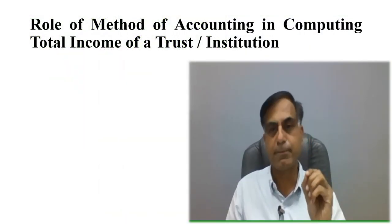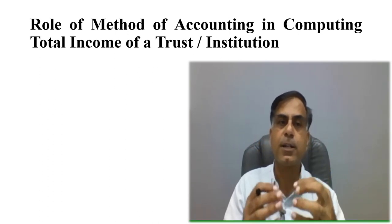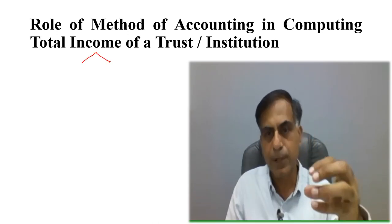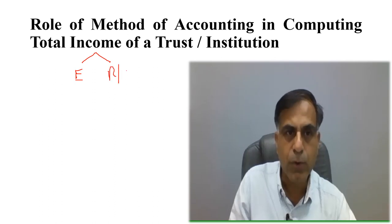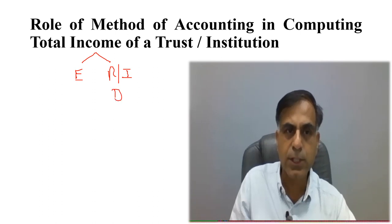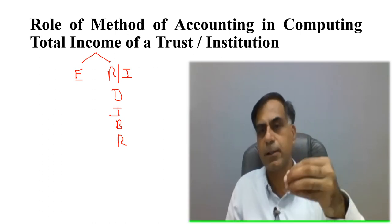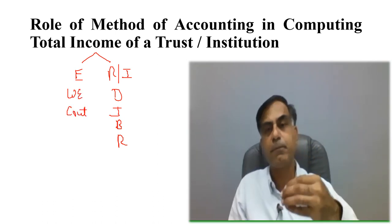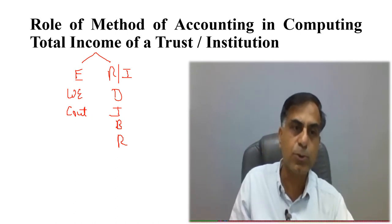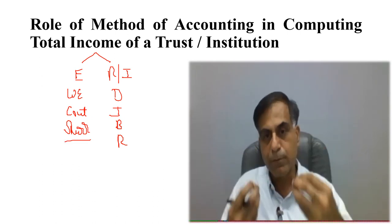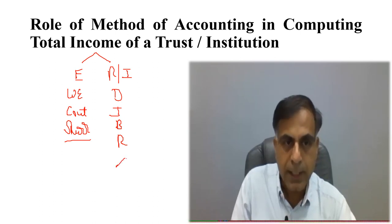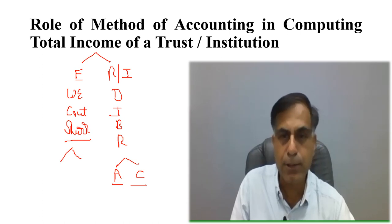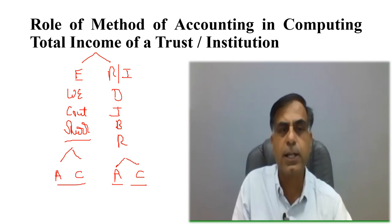Now before I start discussing the amendment, let me first give you a brief idea on the method of accounting in computing total income of a trust or institution. On the income side a trust may include donations, interest, business income, and rentals. On the expense side the trust may include various welfare-related expenses, contributions to other welfare institutions, and expenditure which is due but not yet paid. When the trust books its income, it has the option to book income on accrual basis or on cash basis. Similarly on the expenses side it should have the equivalent option of either booking expenses on accrual basis or on cash basis.